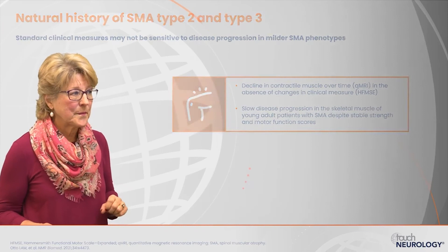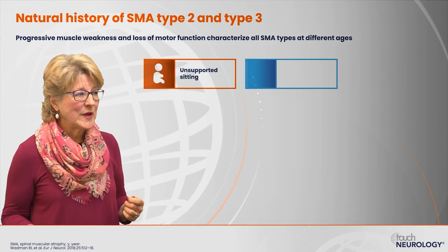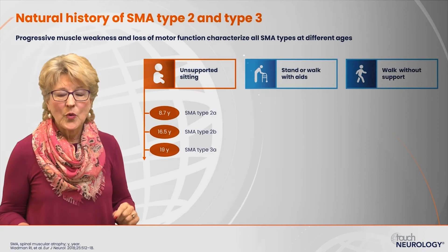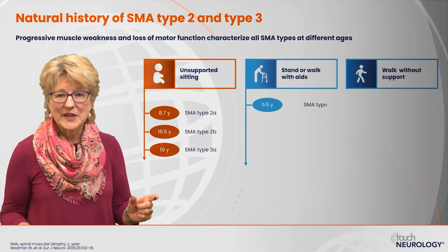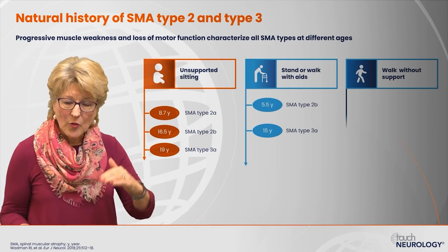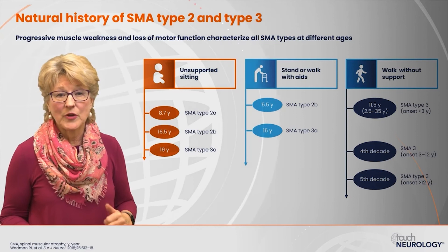With the natural history of SMA types 2 and 3, across all SMA types and all different ages, there is always a decline in function without treatment. The number of SMN2 copies and the age at presentation make a difference in how rapidly the decline occurs. With sitting, standing, walking, or walking without support, there is always a continual decline in function without any disease-modifying therapy.